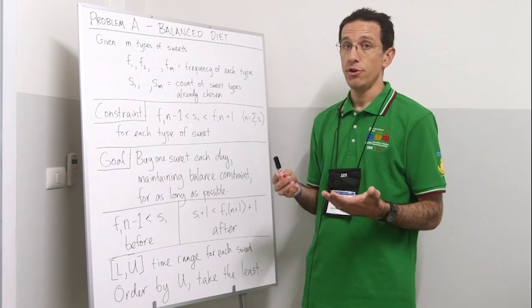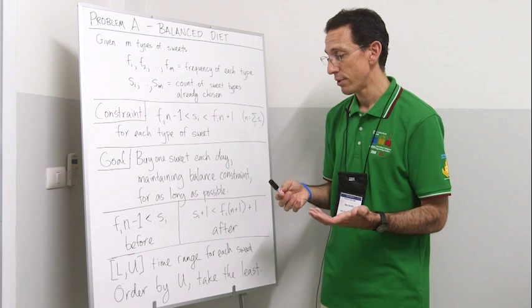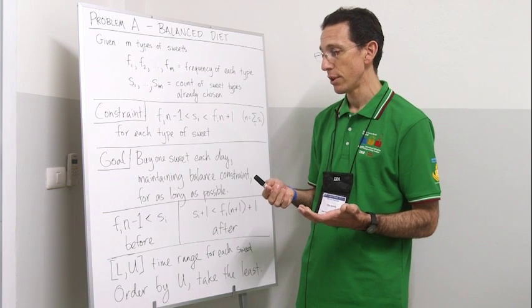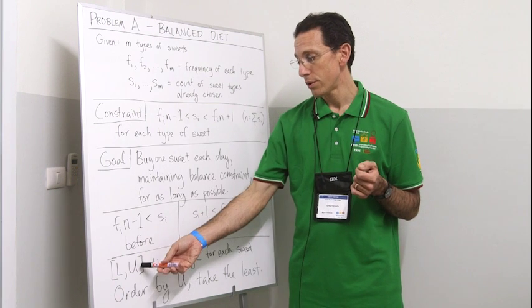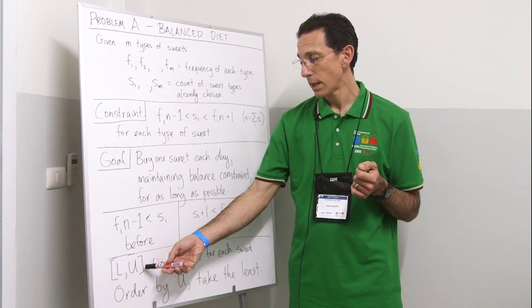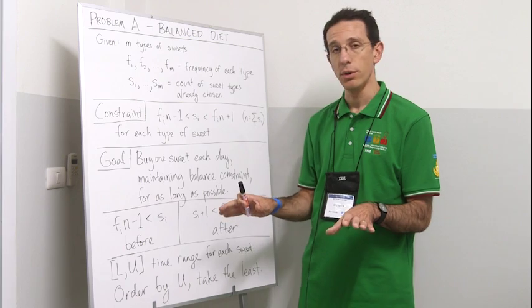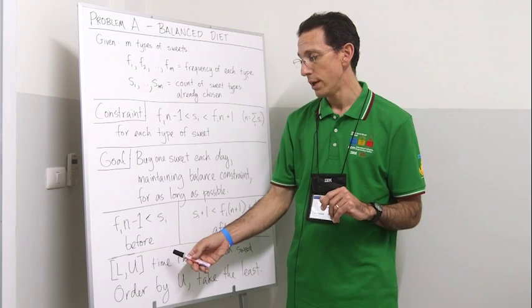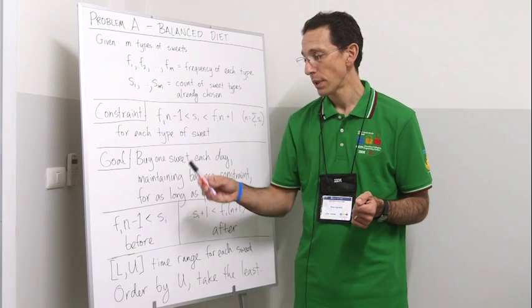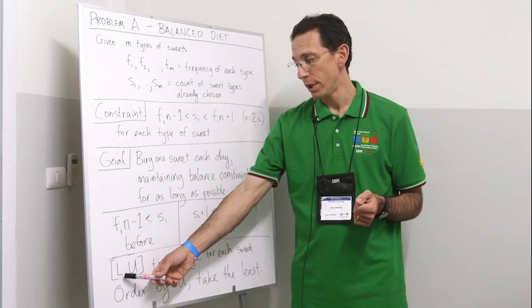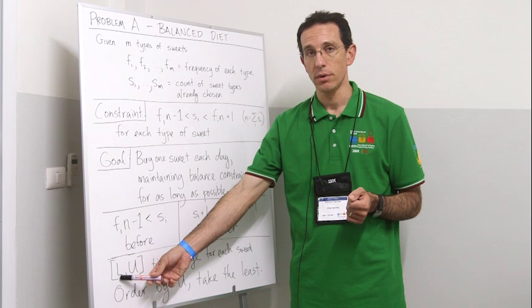This suggests that we can use two priority queues. It also suggests that we have a scheduling algorithm. The scheduling algorithm is that we can order these intervals in these two queues in two ways. For those sweets which are not yet available, which he cannot yet eat at the current time, we're going to order those sweets by increasing lower bound, so we'll identify as quickly as possible when the current time reaches that lower bound and that sweet becomes available.